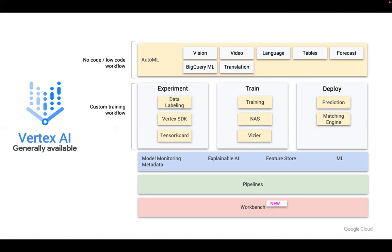The first part is AutoML, now integrated with Vertex AI. It's a no-code, low-code workflow with varieties of models already available, or we can pass our data and train quickly. It handles vision, video processing, language processing, tabular data, forecasting, handling huge amounts of data through BigQuery, and translation-related models. All of this is already available as part of AutoML, satisfying the first phase of the AI adoption strategy.